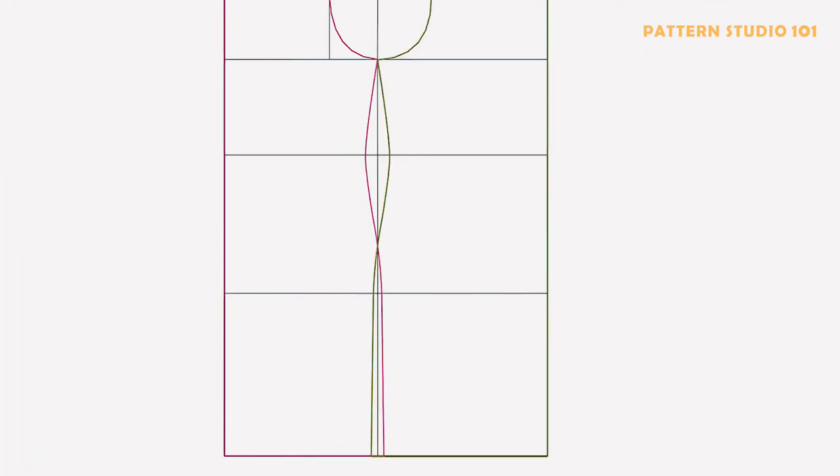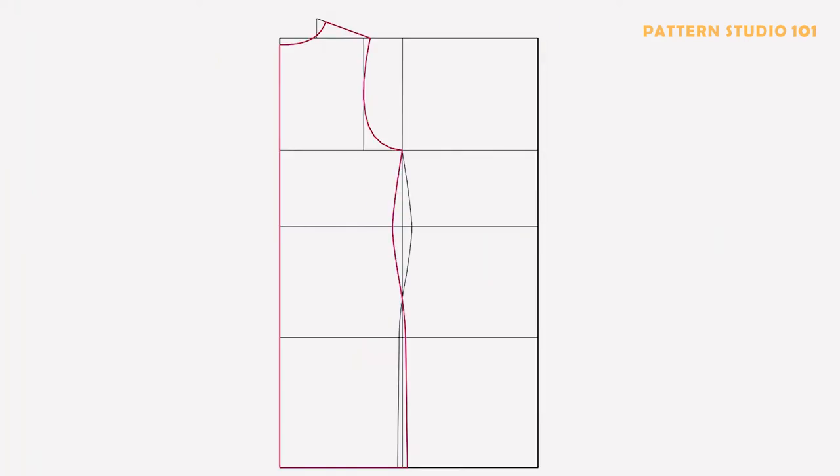The front side seam and back side seam are symmetric. Depending on the shape you want to make, you can take out less amount or you can take out even bigger amount for you to have a tighter waist.